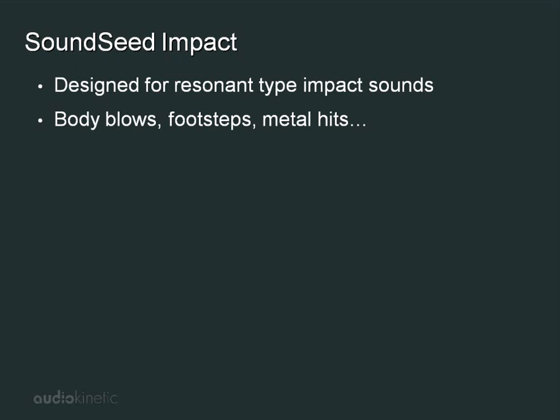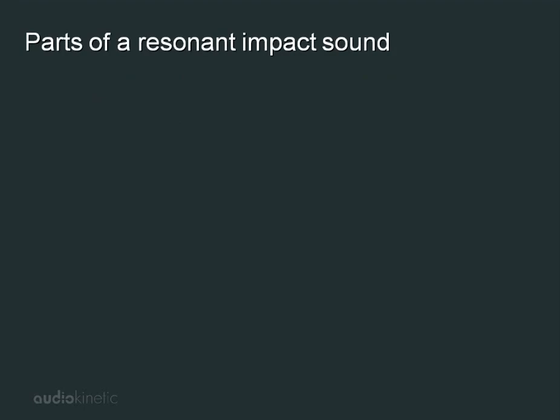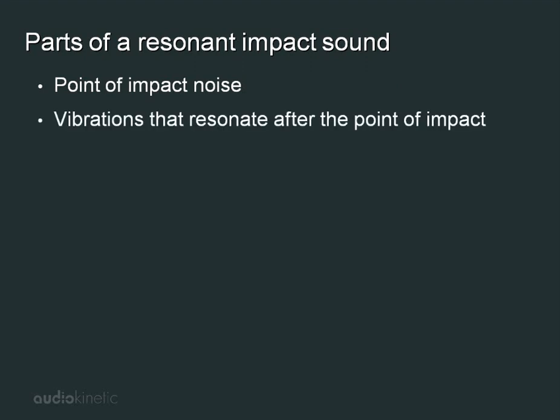Before looking at the specifics of the SoundSeed technology, let's take a closer look at the pieces that make up a resonant impact sound. A resonant impact sound consists of two main parts. The first part is the noise that is made at the point of impact. The second part consists of the vibrations that resonate after the point of impact.